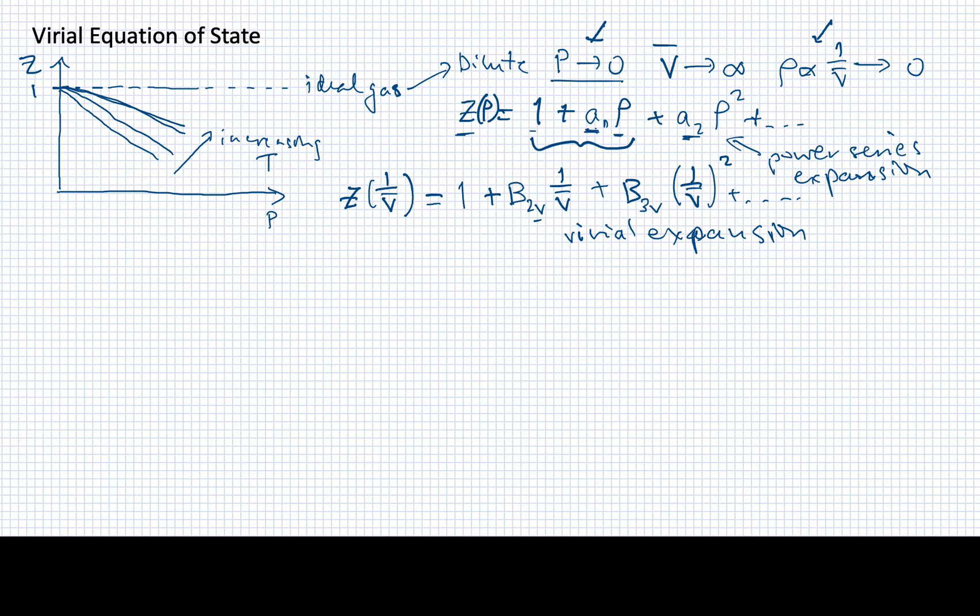So these terms here, these B2v and B3v, because of their placement in this virial expansion, are called virial coefficients. And so part of the game plan for scientists who are studying non-ideal gases is to try to characterize what is the functional, not only the functional form, but what is the value of these virial coefficients. What can we learn from them?